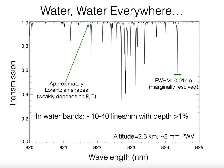For extremely precise radial velocities, it's really water that we need to worry about. That's due in part to the fact that water lines are very numerous—they're everywhere once you get past about half a micron in wavelength. The other issue is that the lines change in depth all the time. Those lines are organized roughly in bands, and within those bands you get tens of lines per nanometer of spectrum having depths greater than one percent.